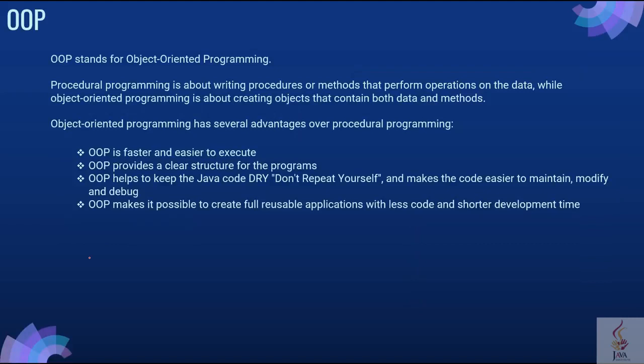Procedural programming is about writing procedures or methods that perform operations on data, while object oriented programming is about creating objects that contain both data and methods. Object oriented programming is faster and easy to execute, provides a clear structure for the programs, and helps to keep the Java code DRY, making the code easy to maintain, modify and debug. OOP makes it possible to create full reusable applications with less code and shorter development time.